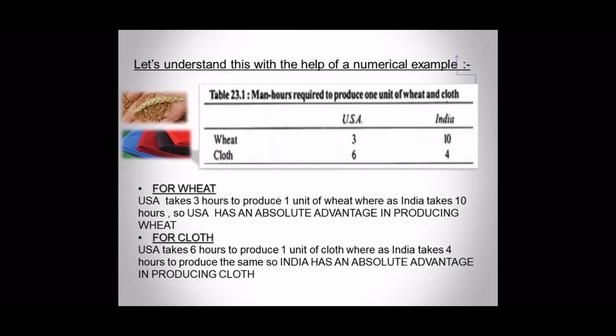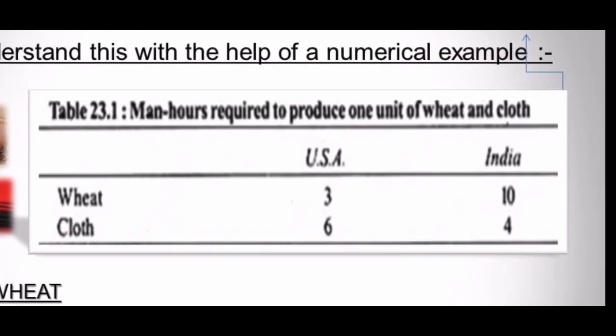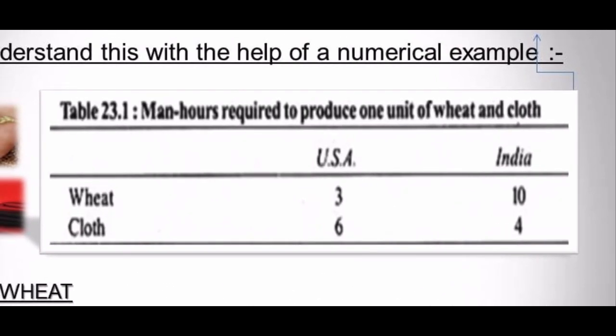Now let's get into the numerical illustration. This is a chart showing the man-hours required to produce one unit of wheat and one unit of cloth. Looking at wheat: USA is taking 3 hours and India is taking 10 hours. So who produces it better? USA, because it takes fewer hours. Now looking at cloth: USA is taking 6 hours and India is taking 4 hours. So who produces cloth better? India.